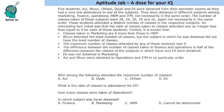Hello everyone, let's solve this caselet. There are five students who were detained from their semester examinations due to very low attendance in one of the subjects. They were detained in five different subjects. These are the names of the subjects, and the number of classes taken in these subjects were 28, 24, 20, 18, and 16. These students attended a different number of classes in their respective subjects.